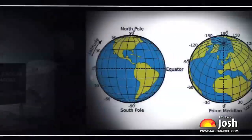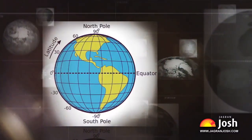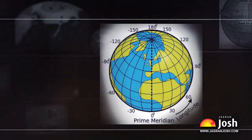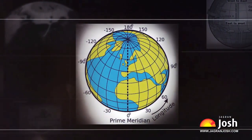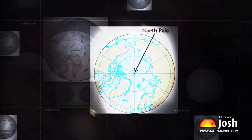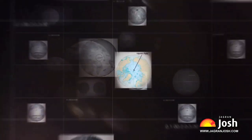Clearly, it would have been very inconvenient if one part of a country had one date while another part had a different date. This is why the international date line is not a straight line.